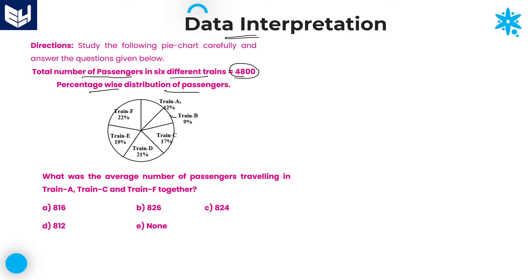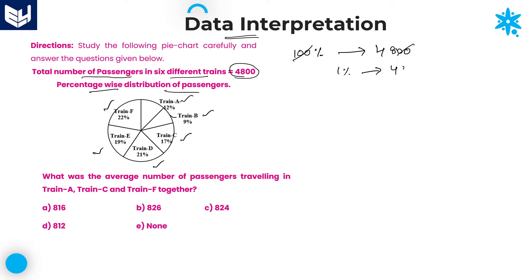We have 6 trains: A, B, C, D, E, and F. Their individual percentages are: A is 12%, B is 9%, C is 17%, D is 21%, E is 19%, and F is 22%. All together that is 100%, which corresponds to a total of 4800 passengers. So 1 percentage value is equal to 48.